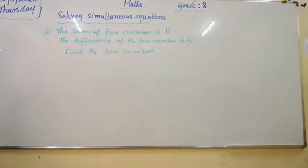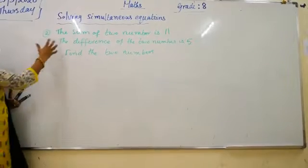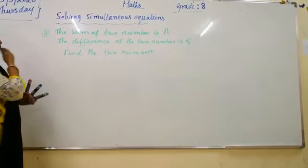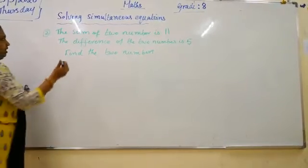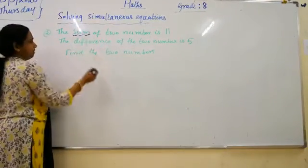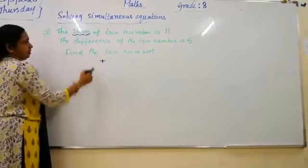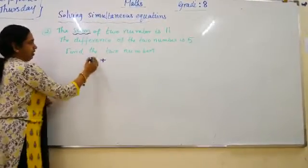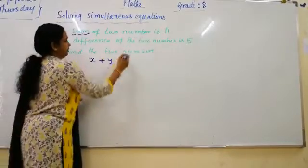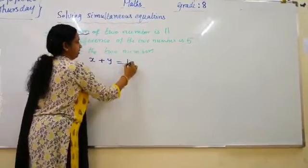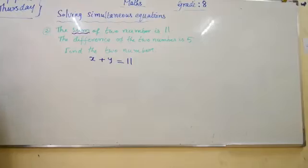This is a word problem. You can't see any x and y here. So we have to write the equation first of all in terms of x and y. The sum means plus two numbers x and y. Is means equal, it is 11.